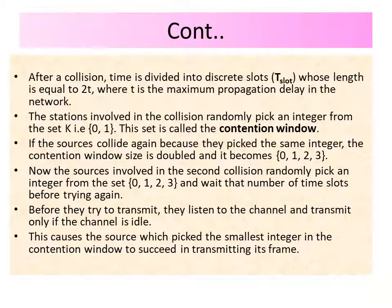So what do the stations do after a collision? Using the binary backoff algorithm, time is divided into discrete slots called T_slot, whose length equals 2t, where t is the maximum propagation delay in the network. The stations involved in the collision — A and B — each randomly pick an integer from the set K = {0, 1}. This set K is called the contention window.